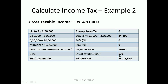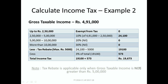Then education cess of three percent is applicable on fourteen thousand one hundred, which comes to around five hundred and seventy three rupees. So the total income tax payable is fourteen thousand one hundred plus five hundred seventy three, which is nineteen thousand six hundred and seventy three rupees.